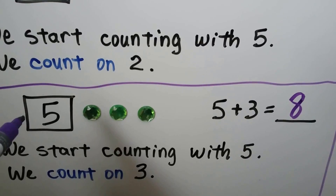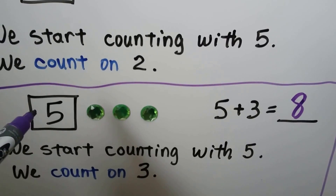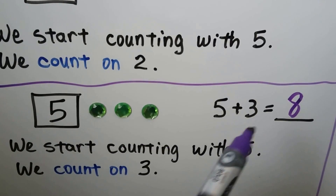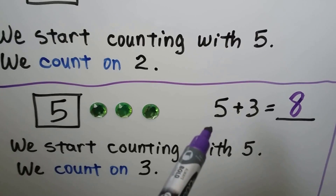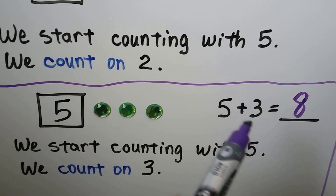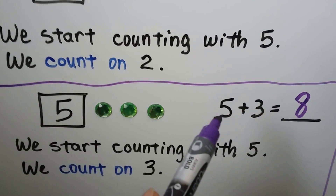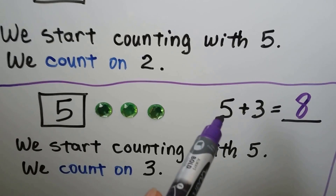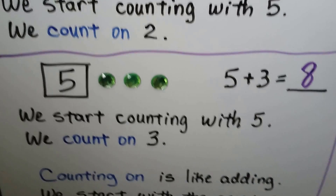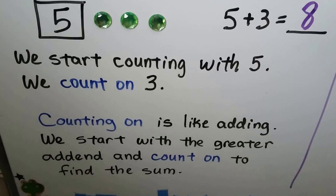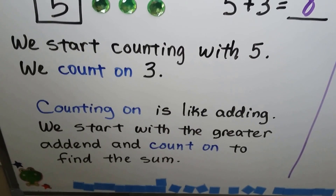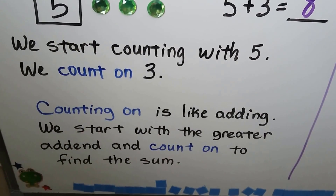We don't need to count up to 5. If we add 5 plus 3, we don't need to say 1, 2, 3, 4, 5, 6, 7, 8. We already know that's a 5. We just start with the 5 and say 6, 7, 8. Counting on is like adding. We start with the greater addend and count on to find the sum.